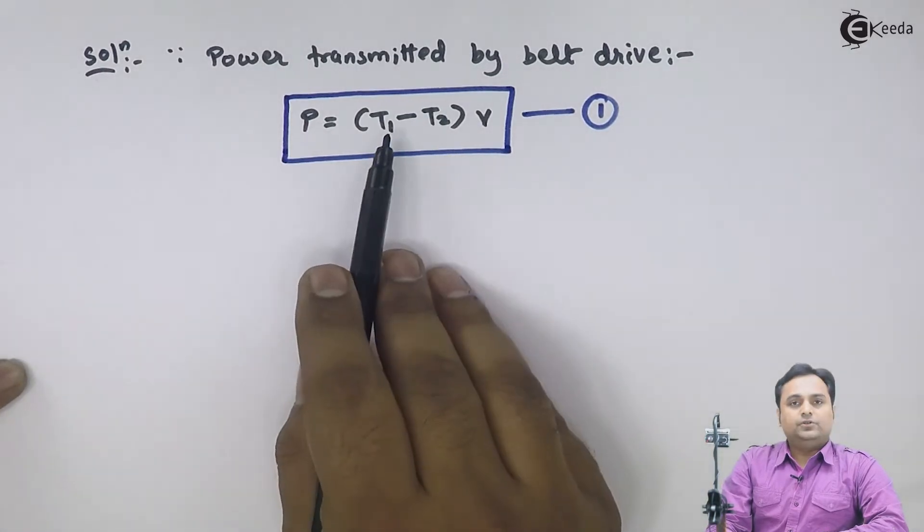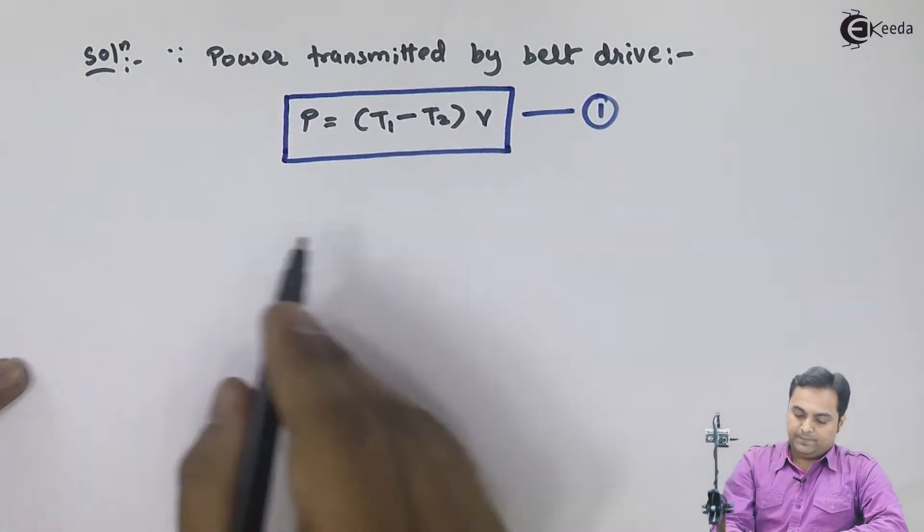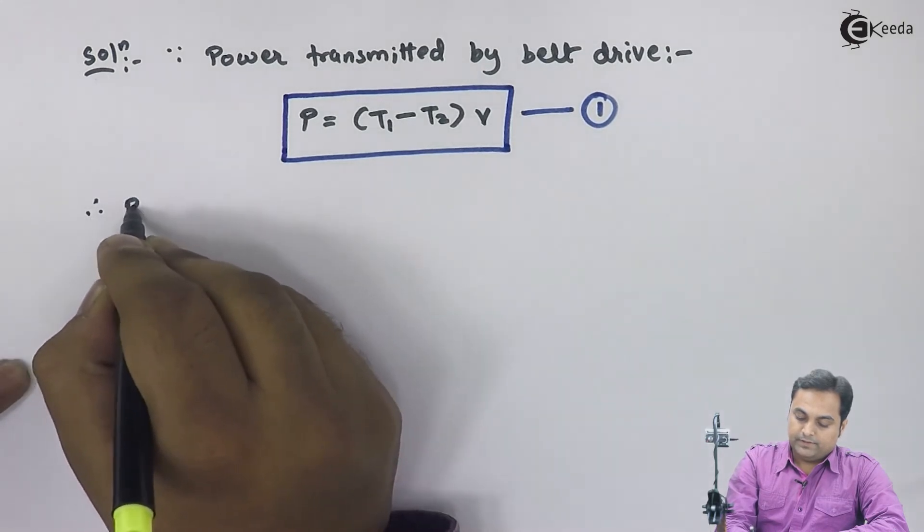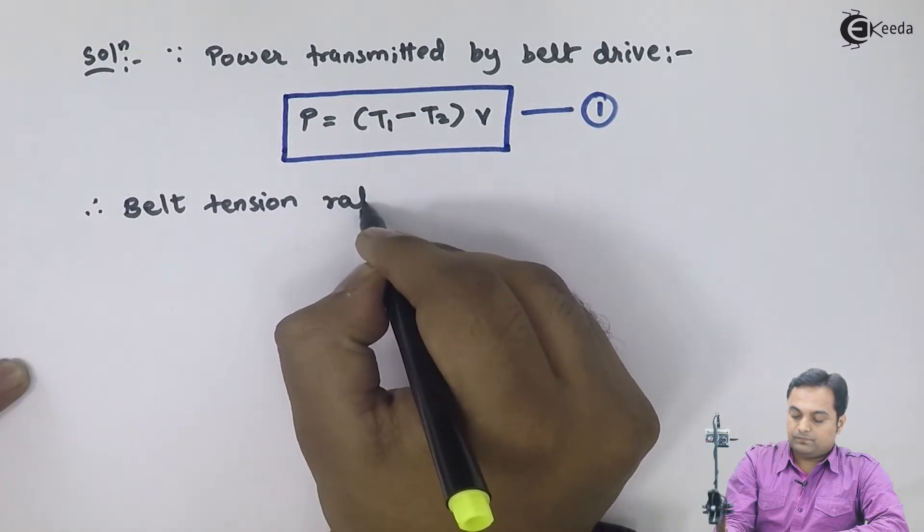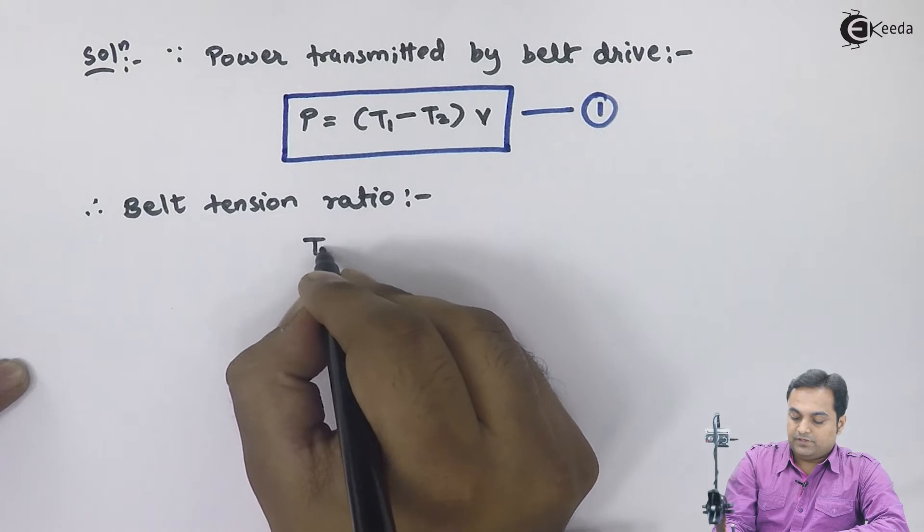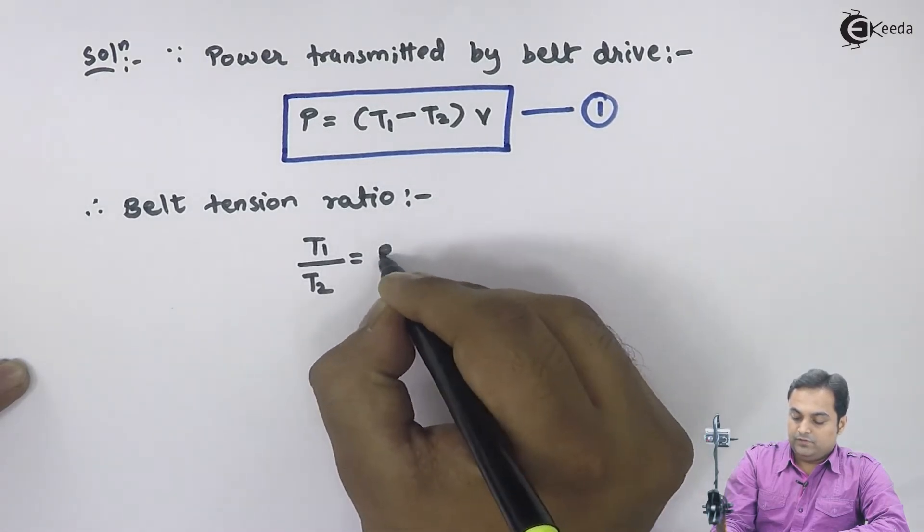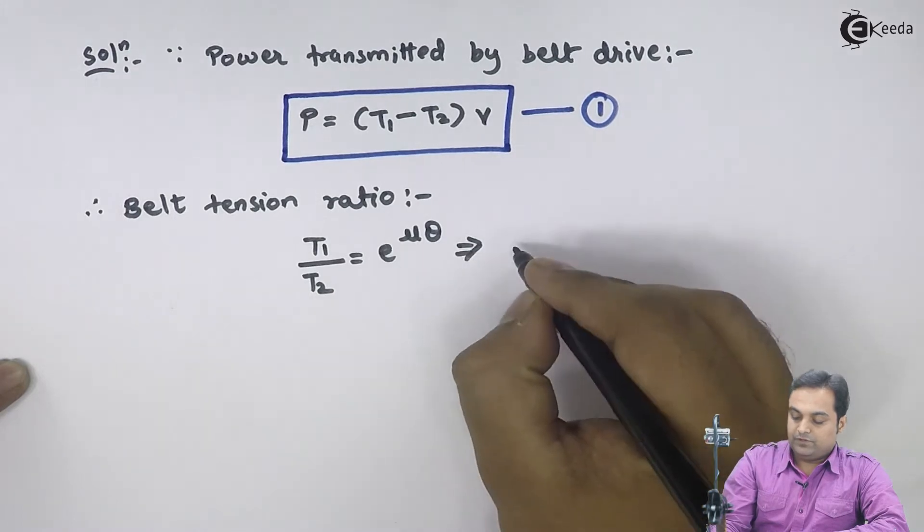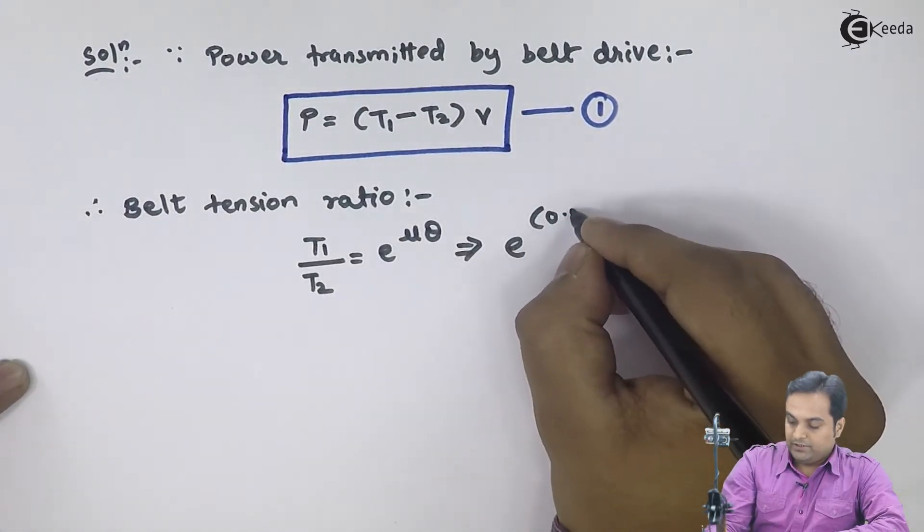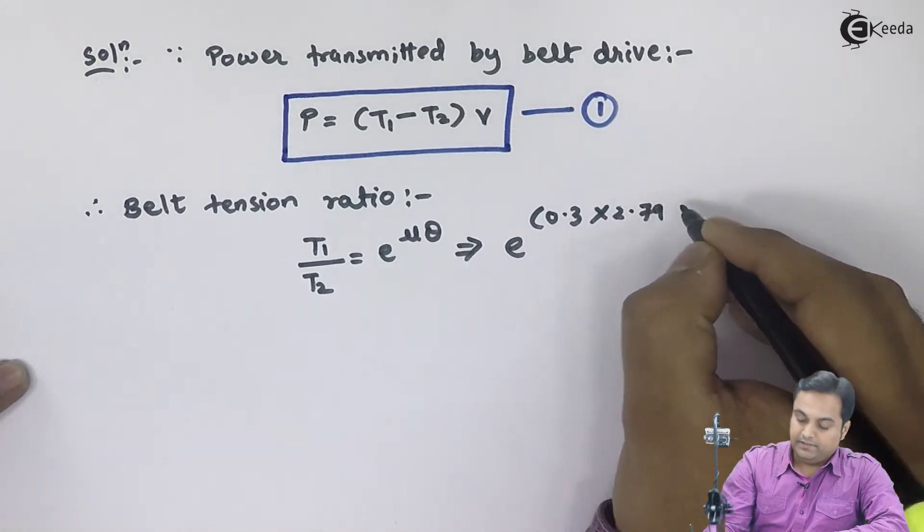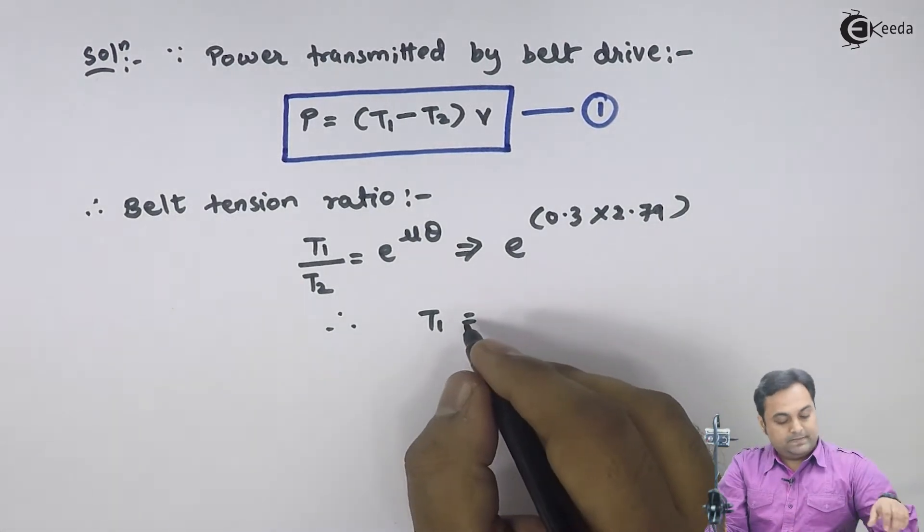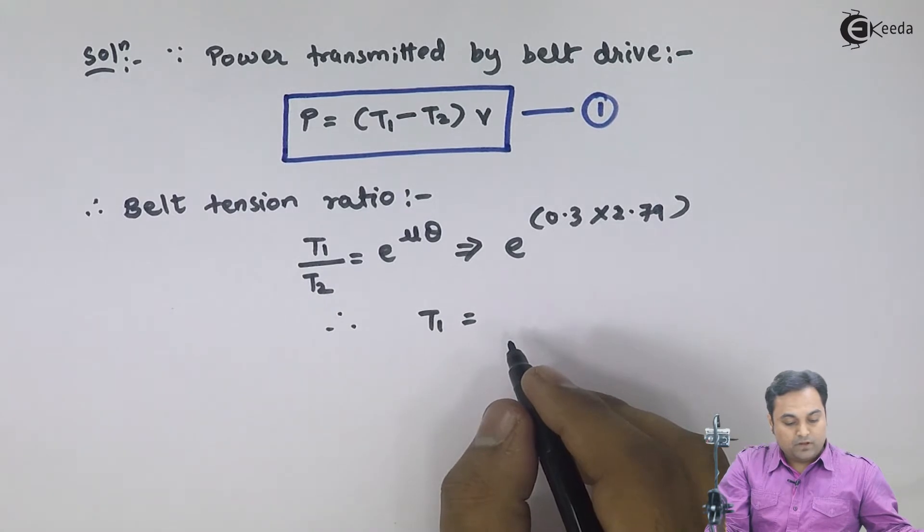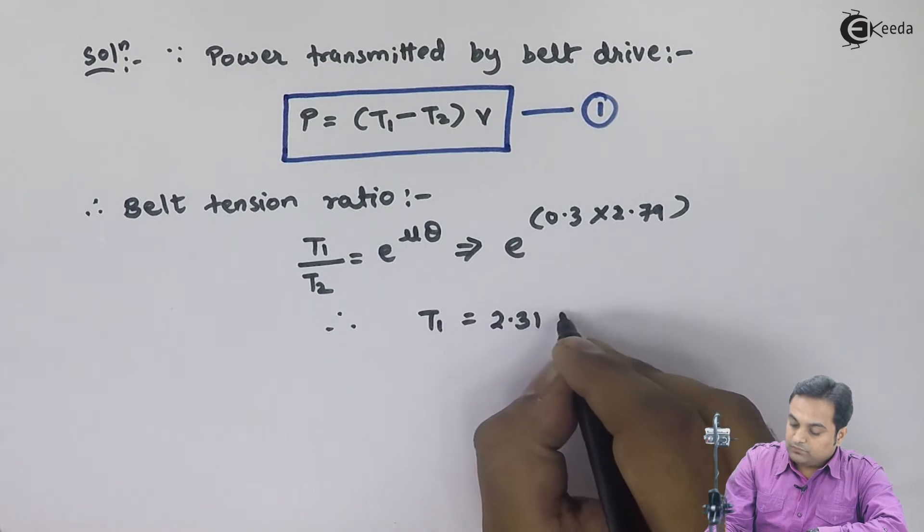To calculate power, we need to have T1, T2 and velocity. Therefore, belt tension ratio is given by T1 upon T2 equals e raised to mu theta. Therefore, e raised to mu is 0.3, theta is 2.79 radians. From this, I will get T1 equals 2.31 times T2.